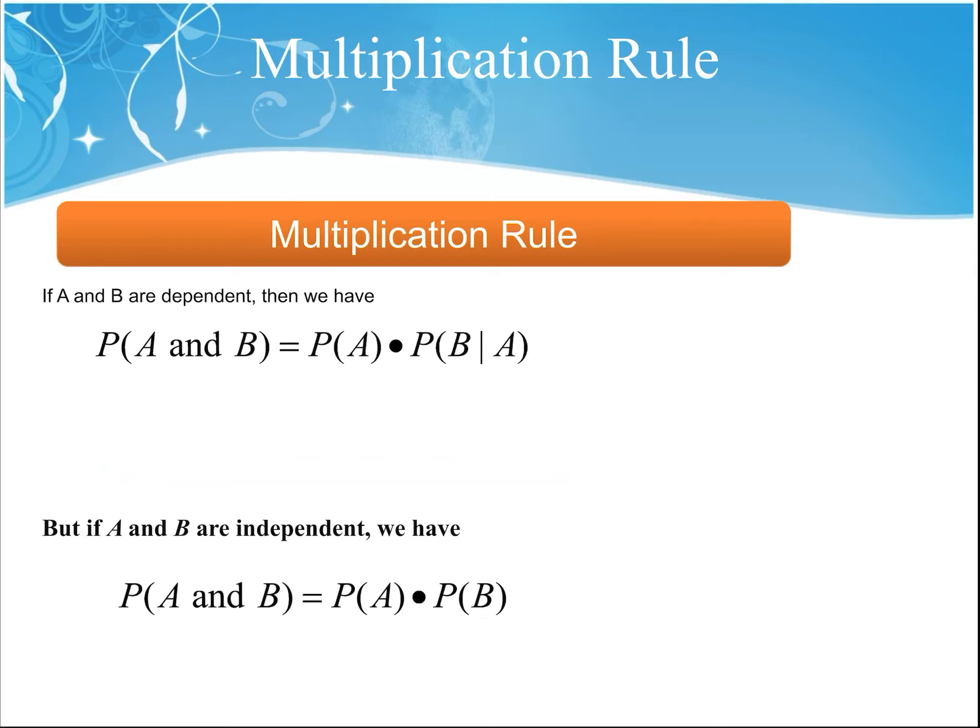Here are the two versions of the multiplication rule. If events A and B are dependent on one another — like selecting apples and oranges out of a bag of fruit — then the probability of event A and then event B happening equals the probability of A times the probability of B given that A already happened. But if events A and B are independent of each other, then the probability of A and B is simply the probability of A times the probability of B, like flipping coins.